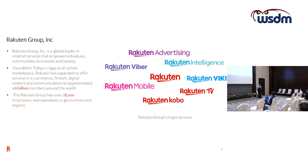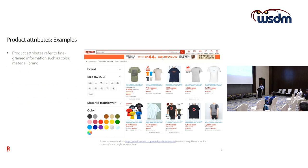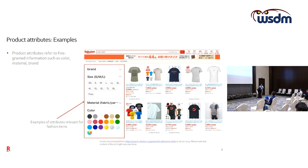I am part of RIT — the Rakuten Institute of Technologies — which focuses on research and using machine learning to power different Rakuten services. Here are a few examples of product attributes: in this screenshot of the Ichiba website you can see filters that we refer to in this talk as product attributes, which are very important for users to narrow down search results and quickly reach the items they are interested in.